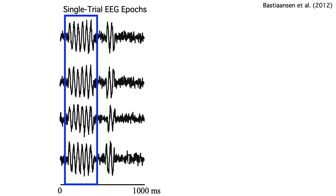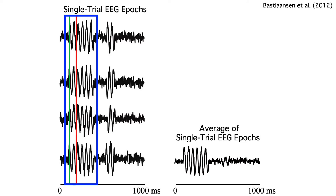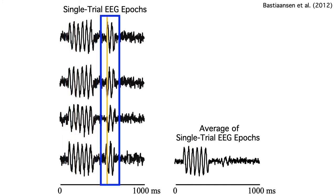The first burst is phase-locked to the stimulus. On every trial, we get positive peaks at consistent times and negative peaks at consistent times. So when we average the trials together, we can see the alpha burst in the average with the same positive and negative peaks. But the second alpha burst doesn't have a consistent phase from trial to trial — where we have a positive peak in the first epoch, we have a negative peak in the second, and no peak at all in the third. These oscillations therefore cancel out in the average, which makes it look as if there was no stimulus-related brain activity at all during this period.